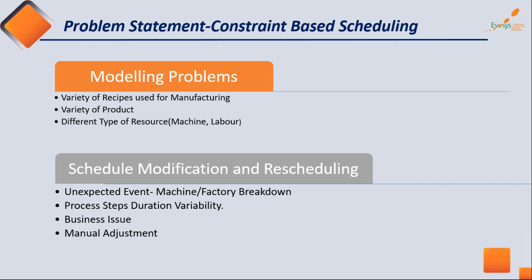If under one roof you need to manufacture products with a variety of recipes, that is a problem. From the business side, we need to accommodate this because today's manufacturing business is versatile — you need to produce versatile products to remain competitive in the market.